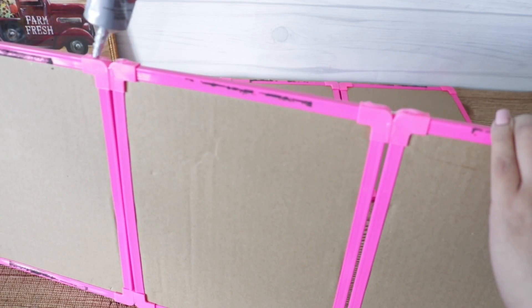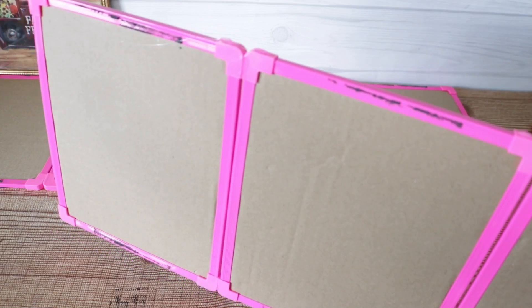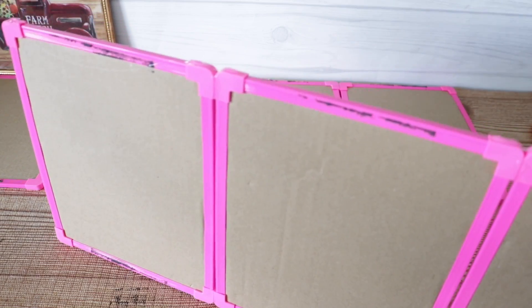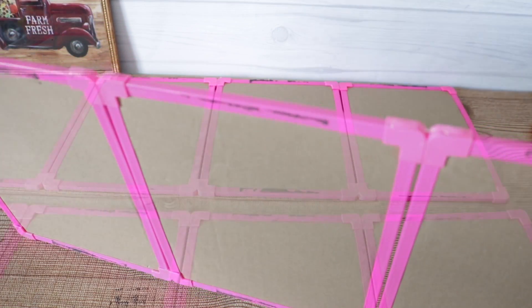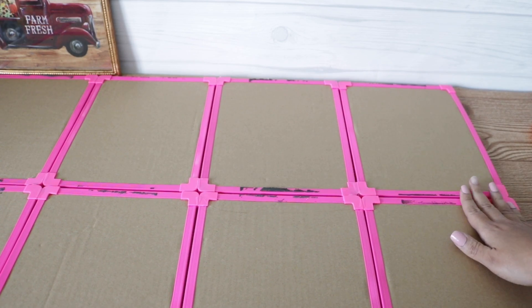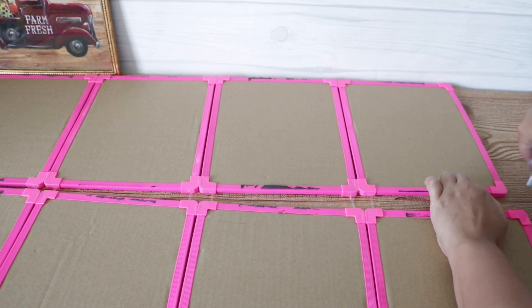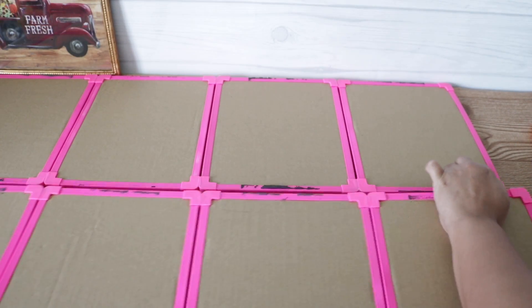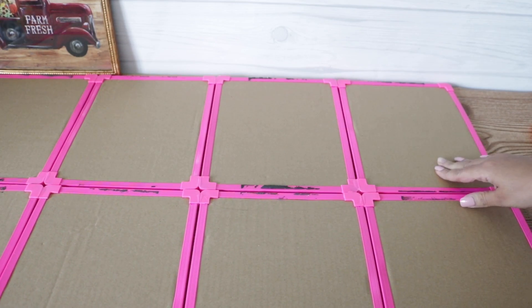Now I'm going to use my E6000 and right at those corners where they meet is where I'm going to be adding the E6000. I'm going to go ahead and attach this by just pushing it up against the other row and making sure it's aligned. If it needs more glue, definitely add it now and make sure that you're getting it on all the corners.